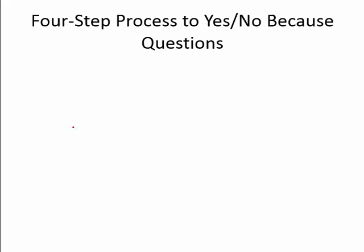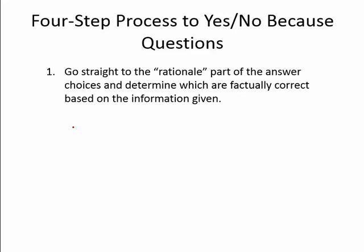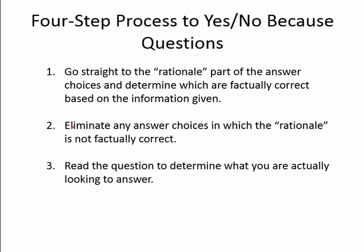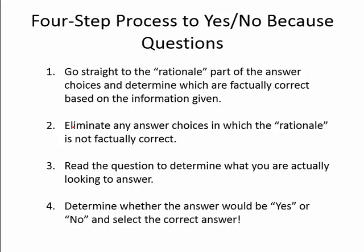Here's the four-step process to tackling these difficult yes, no, because questions. First, go straight to the rationale part of the answer choices and determine which are factually correct based on the information given. Two, eliminate any answer choices in which the rationale is not factually correct. Three, read the question to determine what you are actually looking to answer. And number four, determine whether the answer would be yes or no and select the correct answer.